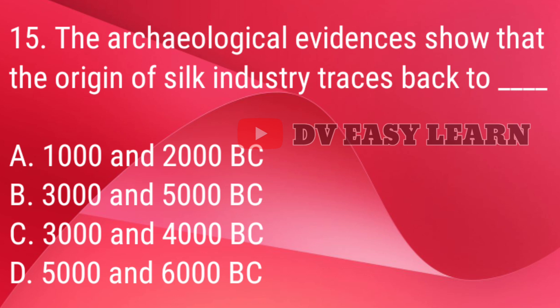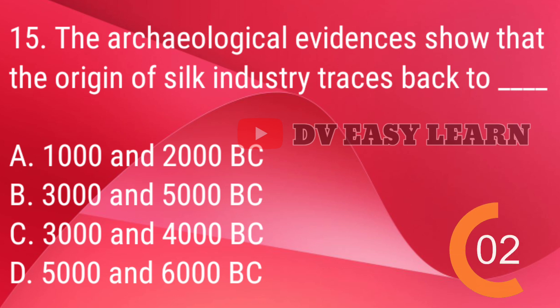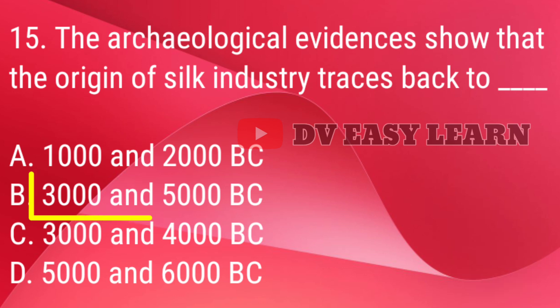Q15. The archaeological evidence shows that the origin of the silk industry traces back to — correct answer: 3000 to 5000 B.C.